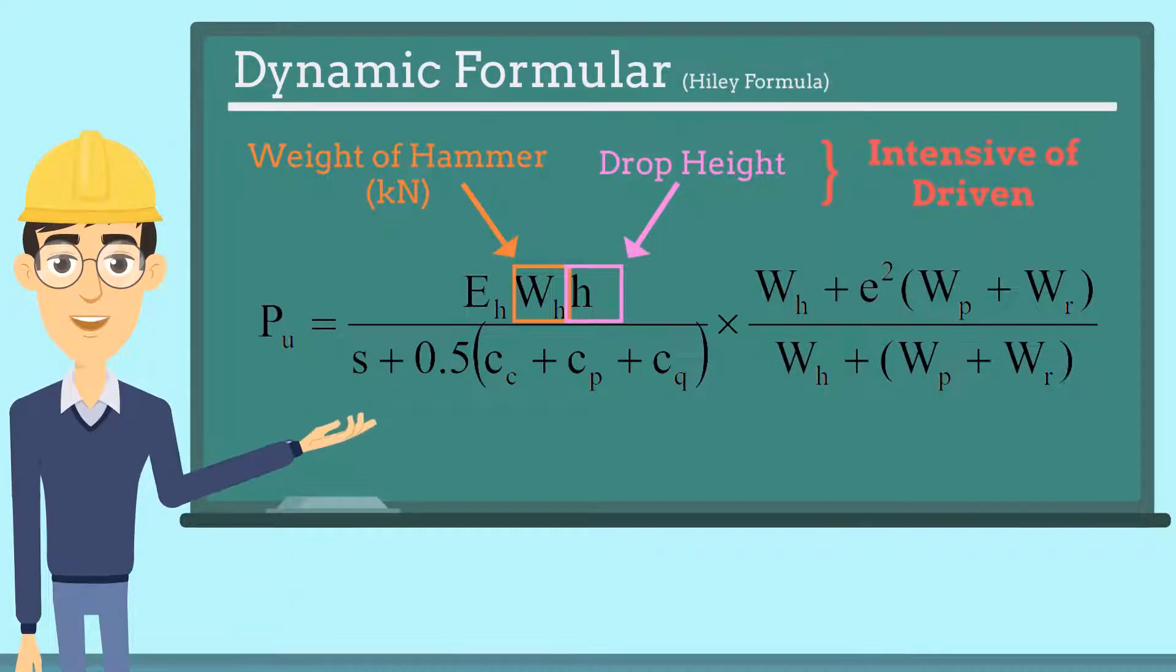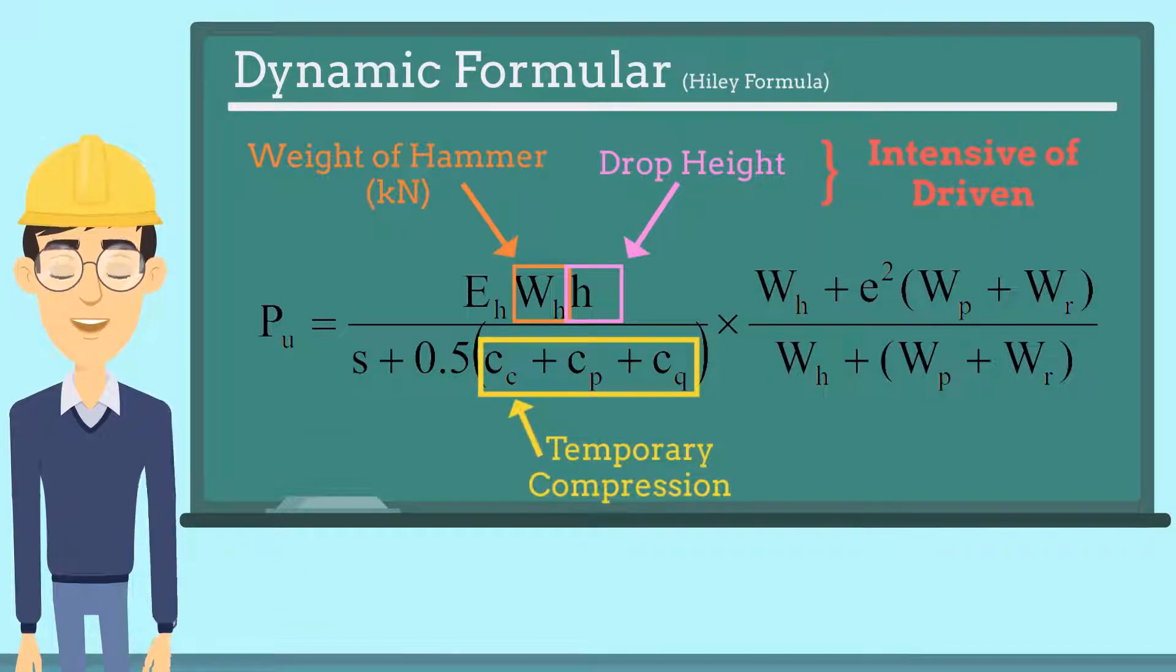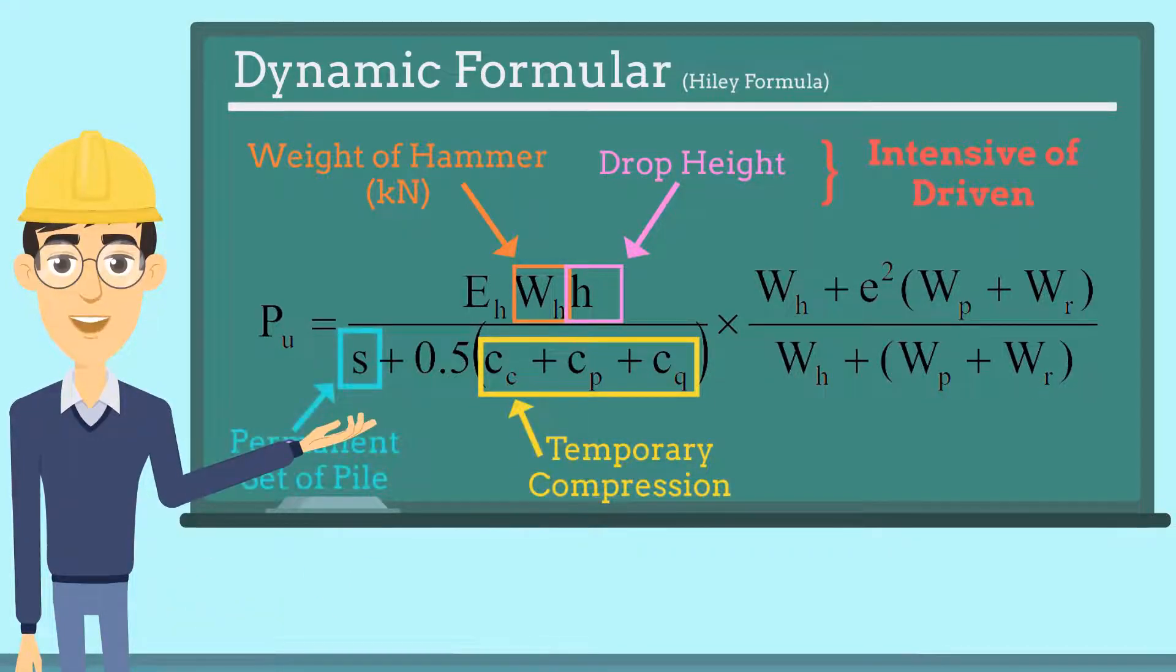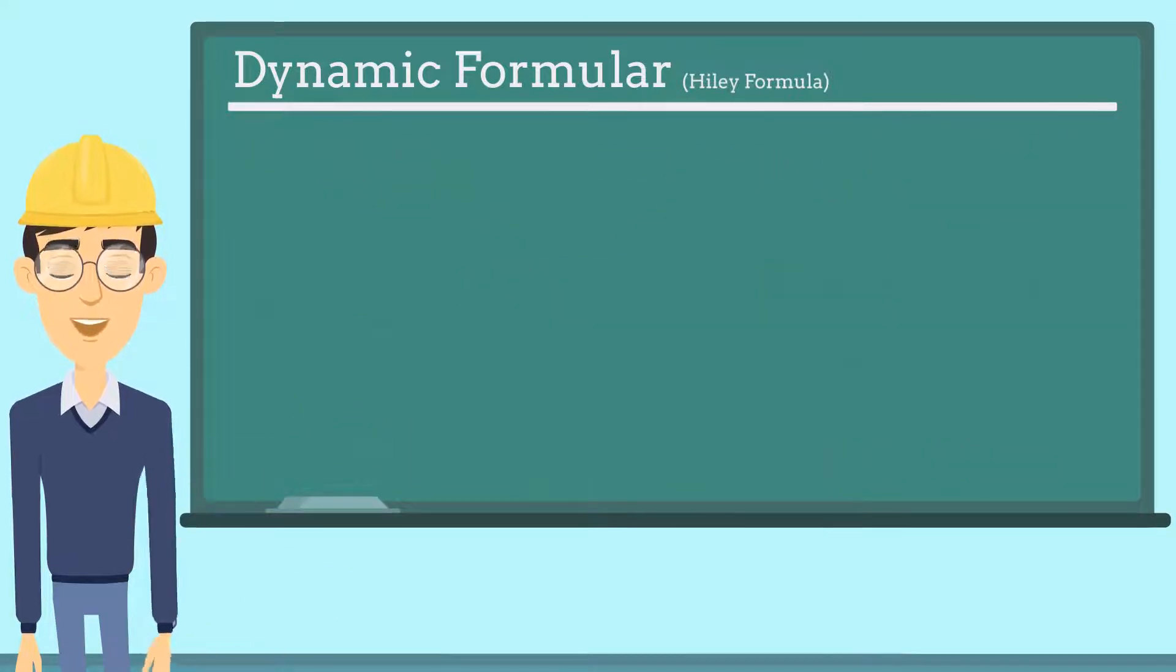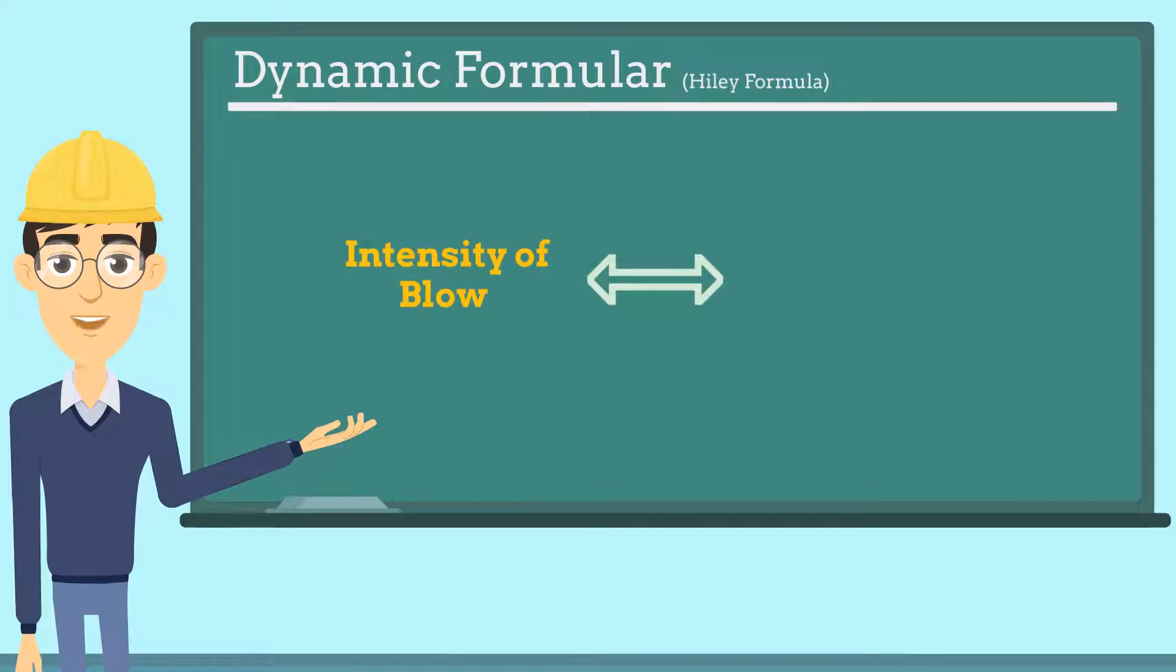in terms of settlement, which is mainly divided into temporary compression and permanent settlement. We will talk in detail in the next part. To conclude, the dynamic method is mainly using the intensity of the blow and the corresponding settlement ratio to estimate the capacity of the pile.